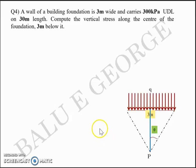A wall of a building foundation is 3m wide and carries 300kPa UDL along 30m length. You are asked to compute the vertical stress along the center of the foundation 3m below it. So you have a 3m wide strip footing, it extends 30m perpendicular to the direction on the screen. It carries 300kPa UDL with 3m width. You are asked to compute stress at point P, which is 3m below the center of the strip.